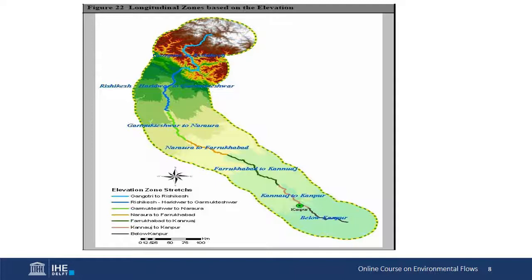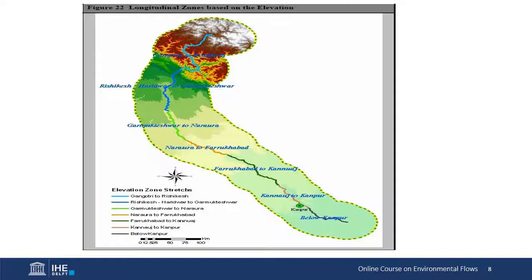Here's an example of zonation for the upper and middle reaches of the Ganga River in India, where seven different zones were identified from Gangotri up in the Himalayas down to Kanpur in the middle reaches. Five zones were mainly defined in terms of gradient as the river flattened out reaching its floodplain sections, but also by major barriers such as barrages and different land uses.